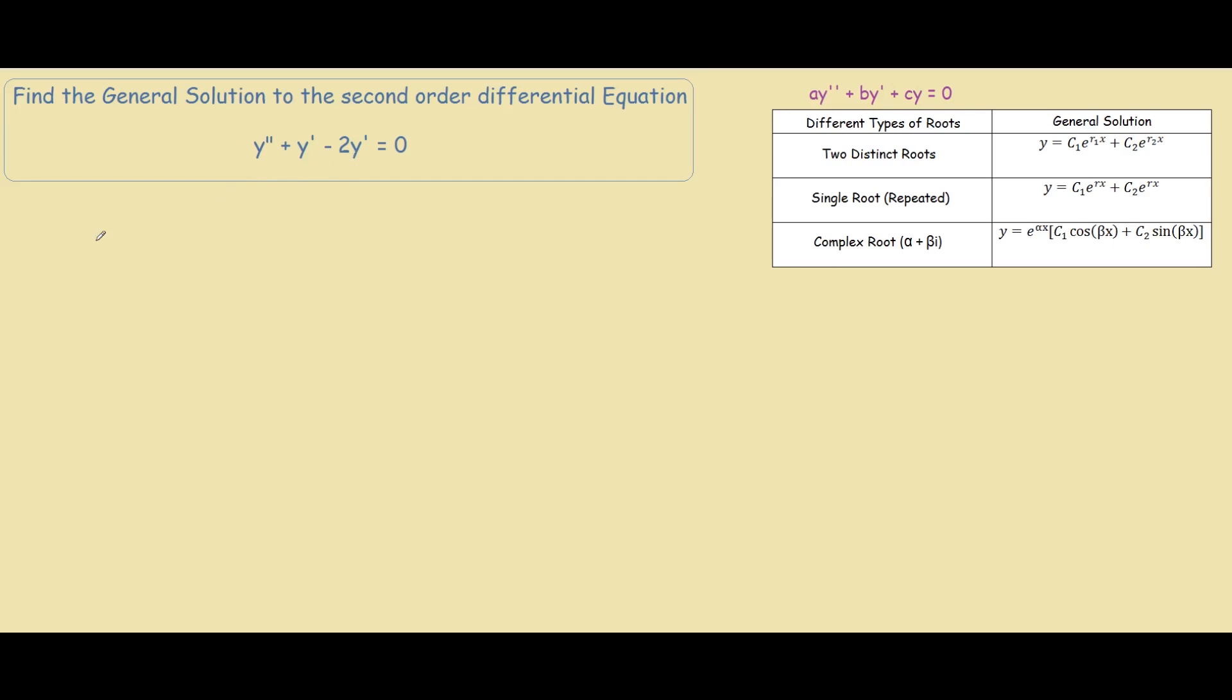So let's begin our first step which is to change it into its characteristic form. We have m squared plus m minus 2 equals to 0.